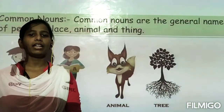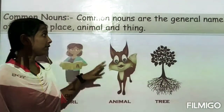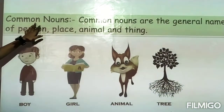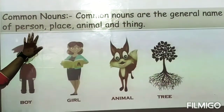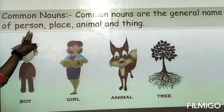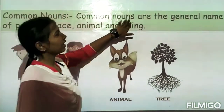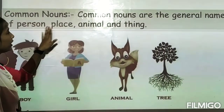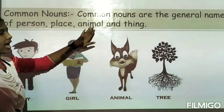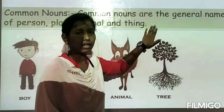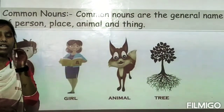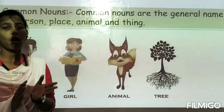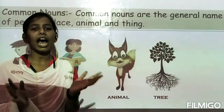Let us begin with the common noun. A common noun is the general name of a person, place, animal, and thing. Common nouns are general names — not specific ones — used for any person, place, animal, or thing.